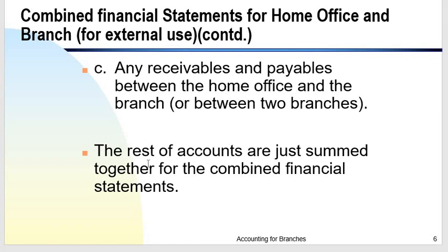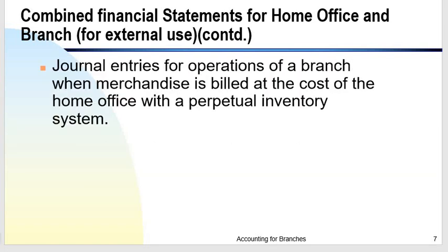The rest of the accounts are just summed — you simply add those accounts not subject to elimination in the preparation of the combined financial statements. We will be discussing journal entries for branch operations when merchandise is billed at cost by the home office using a perpetual inventory system. We will have a separate discussion on how to account for transactions when the home office bills the branch at above cost.